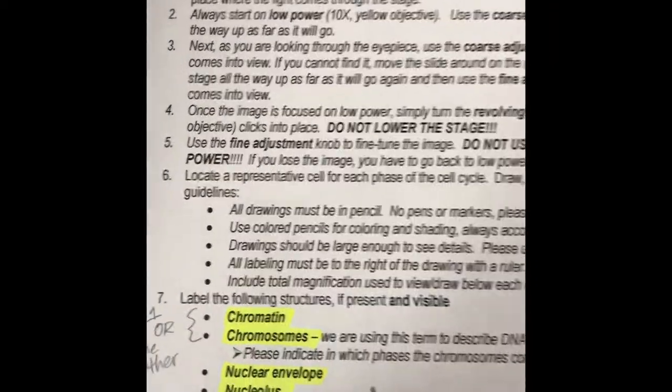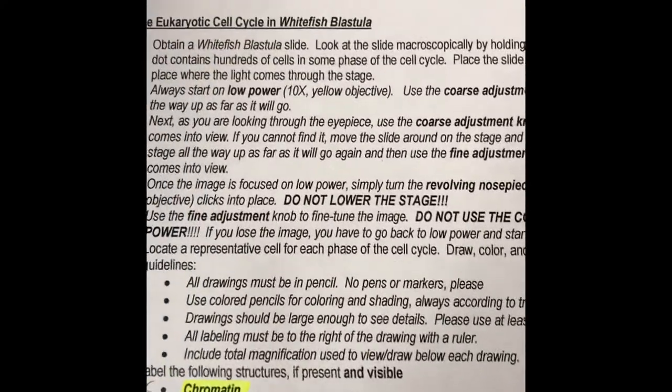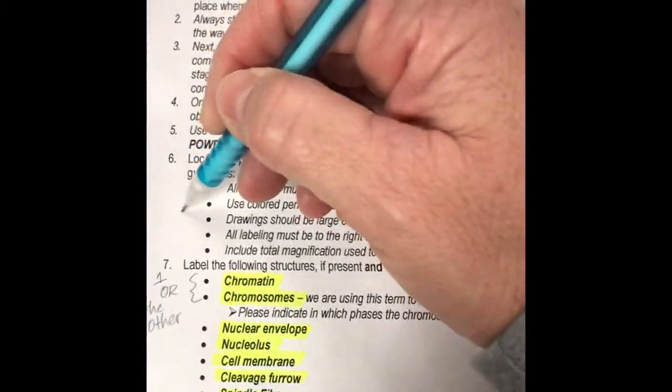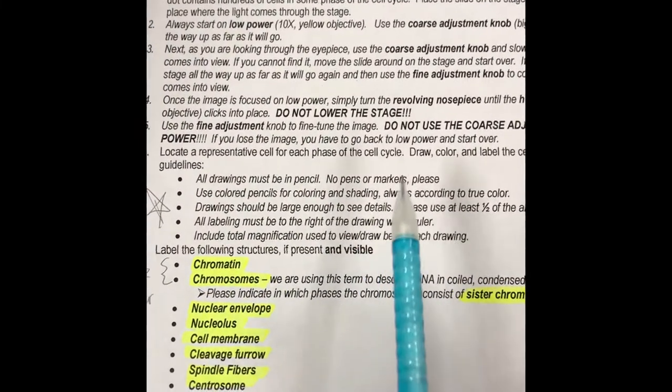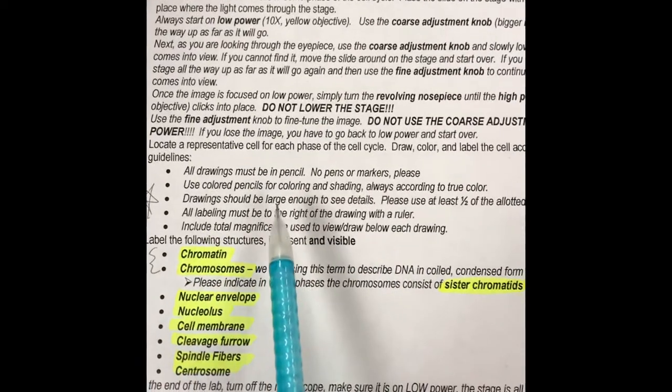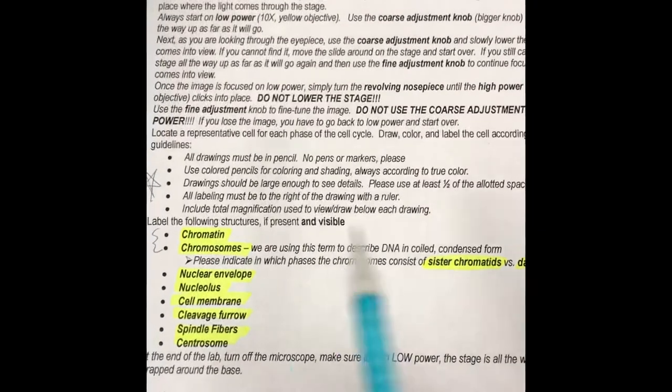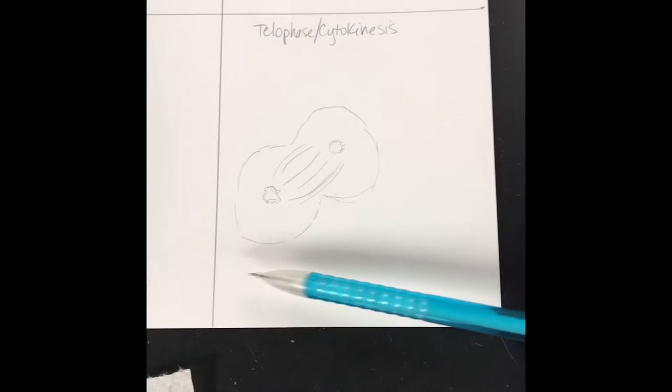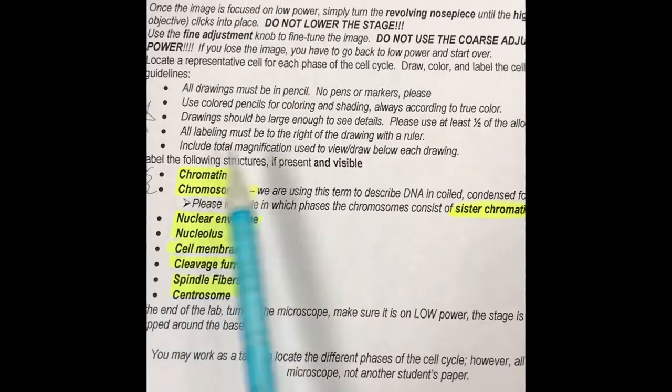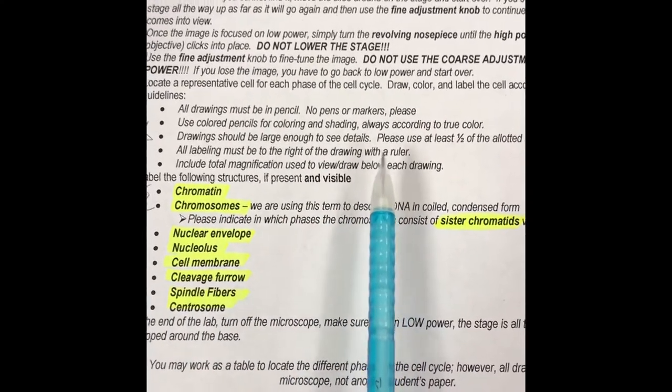But the main thing for me, a couple of rules for labeling, I'm going to go back over here. This is something that I've taught you guys before. But we want to make sure that you're using the rules of how to label, which are right here. This is drawing and labeling. All drawings should be done in pencil, no pens or markers. You may label in pen, blue or black ink. Use colored pencils for coloring and shading, always according to true color. Drawing should be large enough to be able to see the details. I think that's pretty good. I would say take up about half the available space in that quadrant.